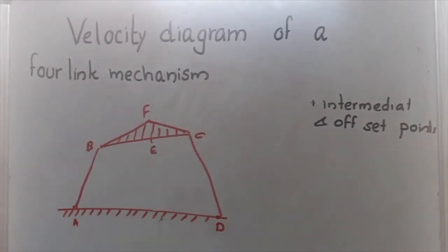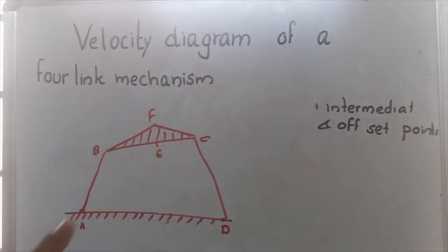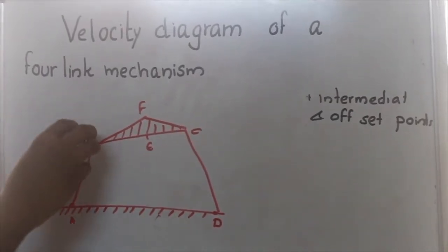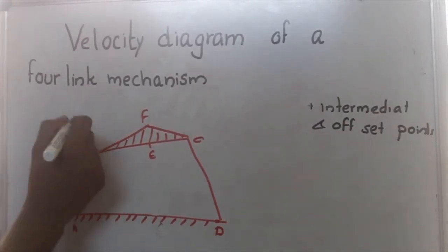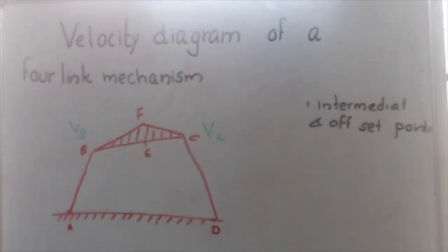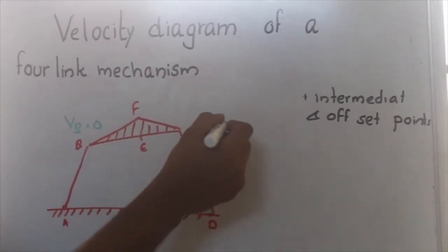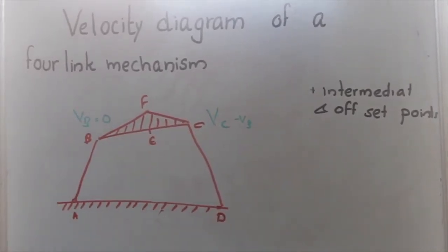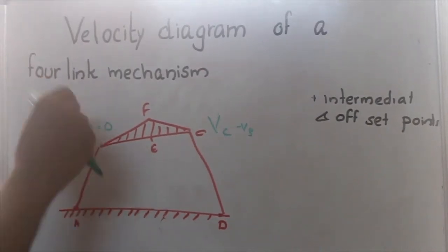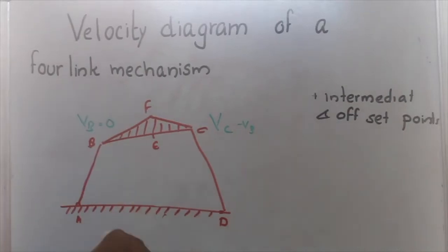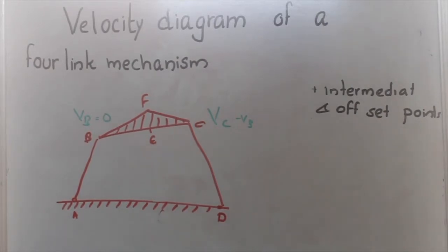Similarly, look at link BC. When we consider link BC, in the real situation B and C are both moving. But if we consider B to be fixed first, then B will be stationary with velocity zero, and the velocity of C will be VC minus VB. In that case, link BC moves such that B acts as the center and C rotates about that point. The relative velocity will be perpendicular to line BC. Using this concept, we are going to draw the velocity diagram.